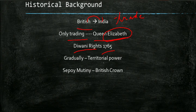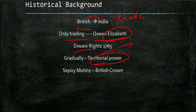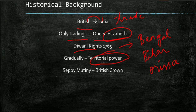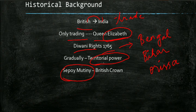So they were just trading — but how did they start ruling us? It is because of the Diwani rights given in 1765. Because of the Diwani rights, they gradually became a territorial power. First, the Diwani rights were given in the areas of Bengal, Bihar, and Orissa. From there they gradually became a territorial power.